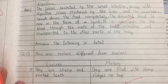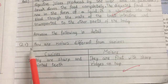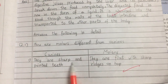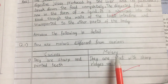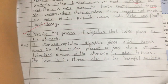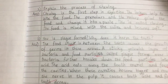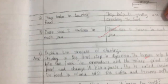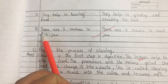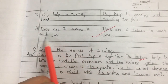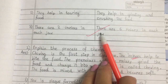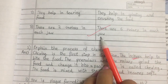Answer the following in detail. Question 1: How are molars different from canines? Canines are sharp and pointed teeth that help in tearing food; there are two canines in each jaw. Molars are flat with sharp ridges on top; they help in grinding and crushing the food, and there are six molars in each jaw.